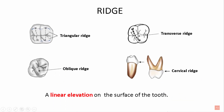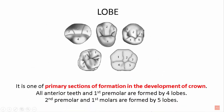A ridge is a linear elevation on the surface of the tooth. There are four types: the triangular ridge is found on the occlusal surfaces of premolars and molars, descending from each cusp tip towards the center. A transverse ridge is the union of two triangular ridges. An oblique ridge is the most prominent ridge going obliquely, present on the permanent first molar. A cervical ridge runs mesiodistally on the cervical third of the buccal surfaces. A lobe is one of the primary sections of crown formation — anterior teeth and first premolars are formed by four lobes, while second premolars and first molars are formed by five lobes.